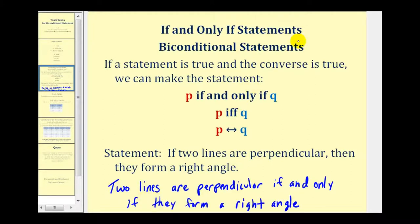But when completing a truth table, the most important thing to remember is this biconditional statement is true if P then Q is true, and if Q then P is true. Let's take a look at our example.